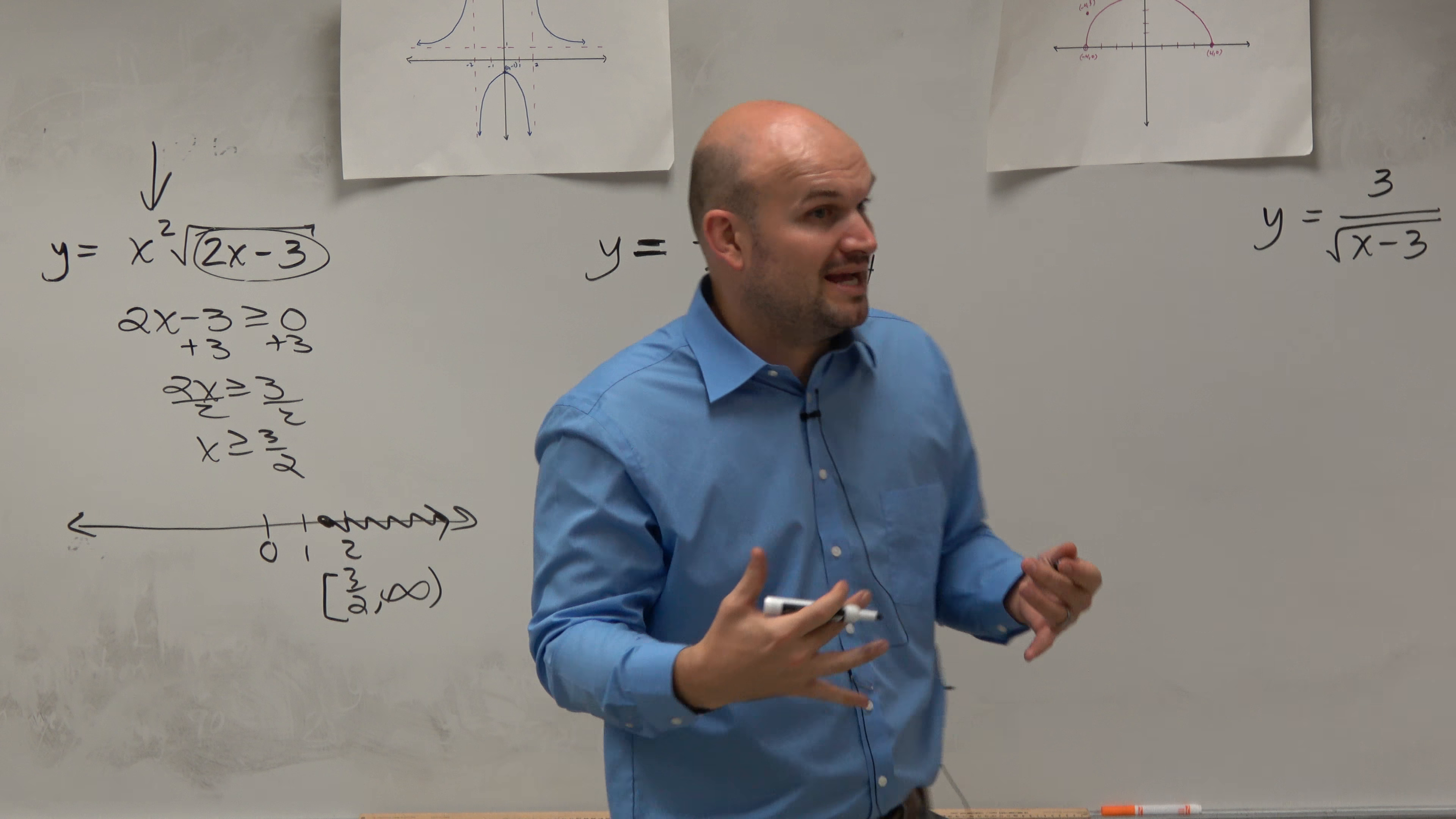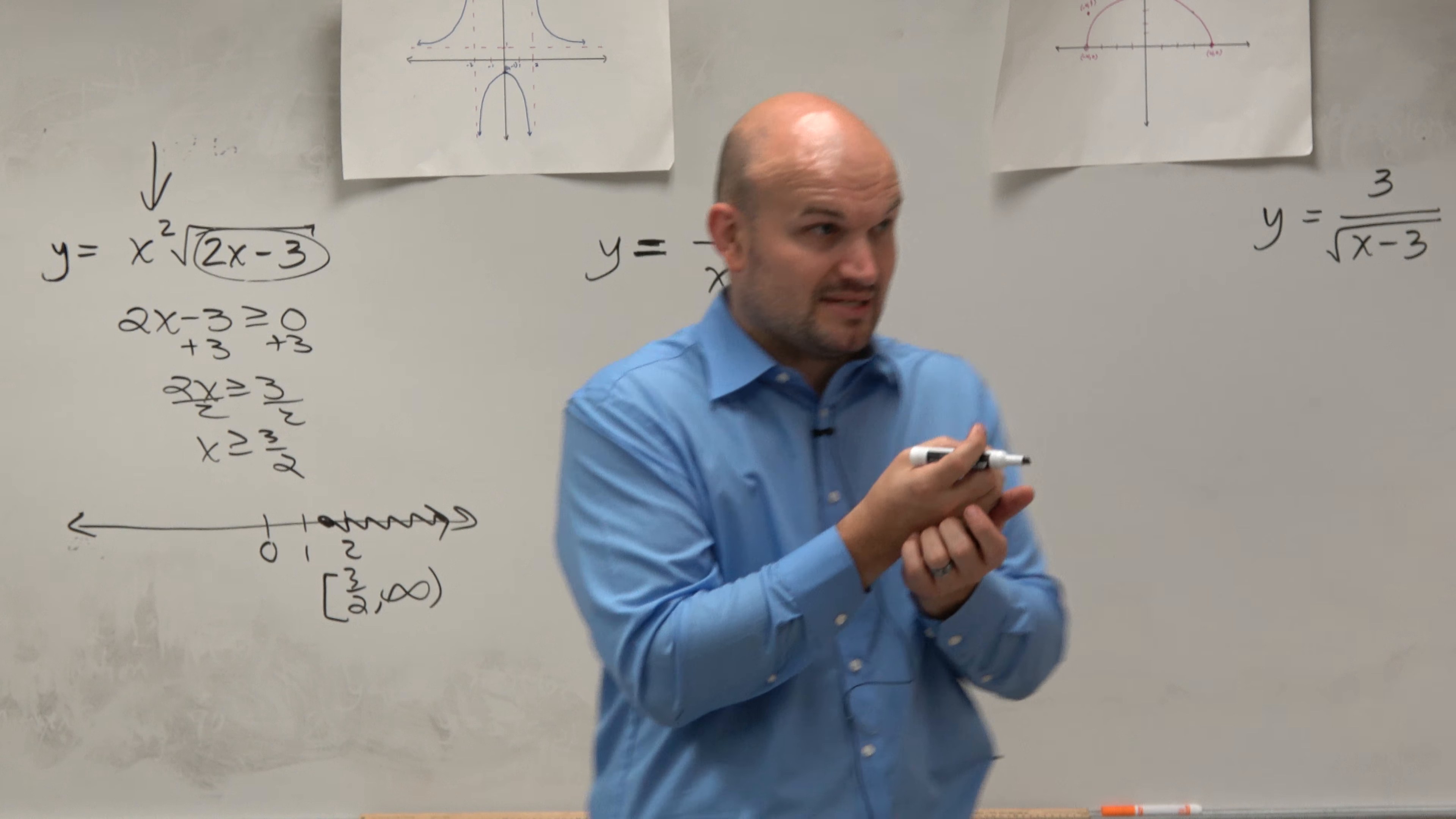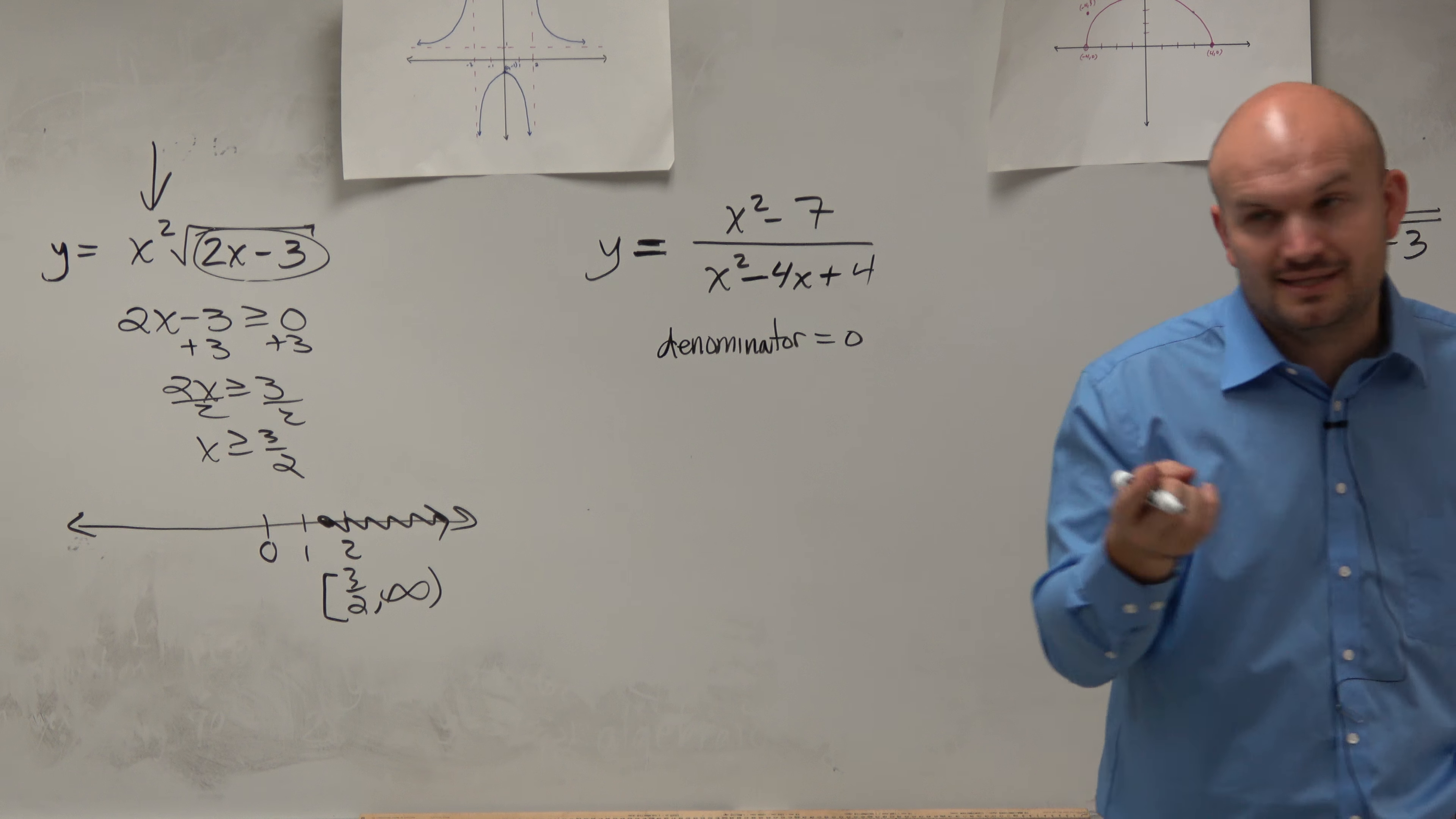If we want to find the implied domain, the easiest way to do this is to say, well, I have a rational function, so I just need to find what values make the denominator zero, because those are going to be the numbers that are not in my domain. Does that make sense? So what you're going to do is take the denominator and set it equal to zero. Those are the values that are not in the domain.